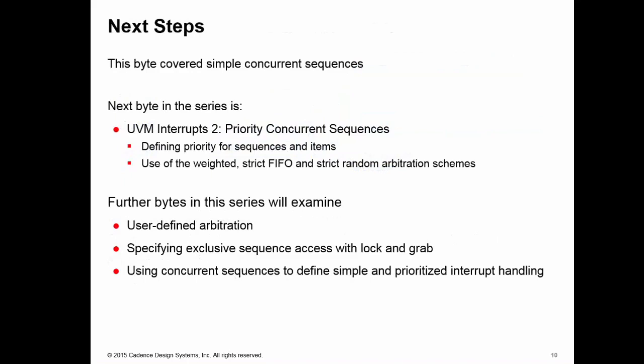This training byte covered the simple concurrent sequences and the simple arbitration mechanisms. The next byte in the series will have a look at priority items and the use of the weighted strict FIFO and strict random arbitration schemes. Later bytes in the series will examine user-defined arbitration, the use of lock and grab for exclusive access, and finally building what we've learnt into a scheme for defining concurrent sequences for simple and prioritized interrupt handling.